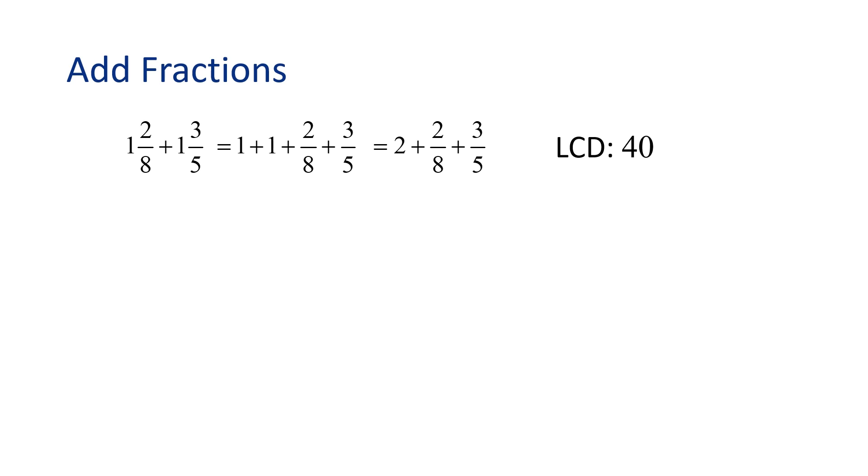Okay, let's find the equivalent fractions with 40 as the LCD. Let's start with 2 8ths. We know 8 times 5 equals 40, so we need to multiply 2 8ths by 5 over 5. When we multiply fractions, multiply straight across. 5 times 2 is 10, and we know 5 times 8 is 40. So 2 8ths equals 10 40ths, or these are equivalent fractions.